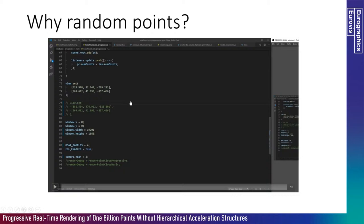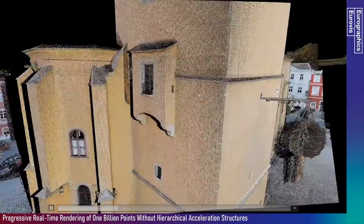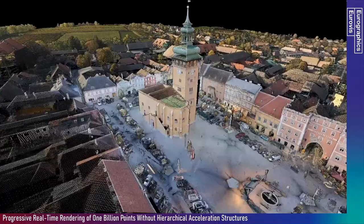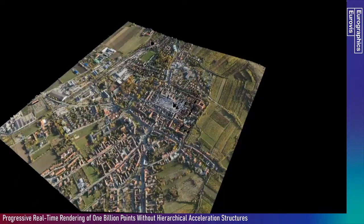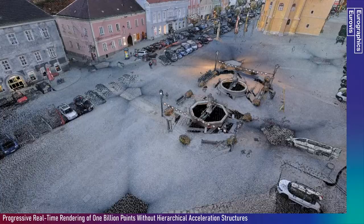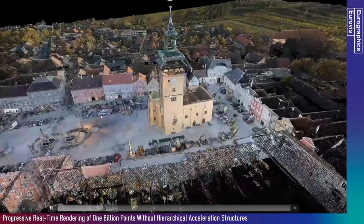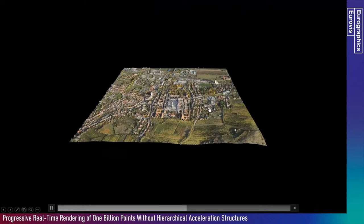Why do we add random points in each frame? Without adding random points, you get very annoying popping artifacts, because in each frame after a transformation you have many holes, and because the points are sorted in some way, you end up filling some holes in one frame, more in the next, but there are always many holes only filled after 10 frames or so. On the other hand, if you randomize the vertex buffer, you still have some rendering artifacts especially at the border of the screen, but you don't get those annoying popping artifacts.